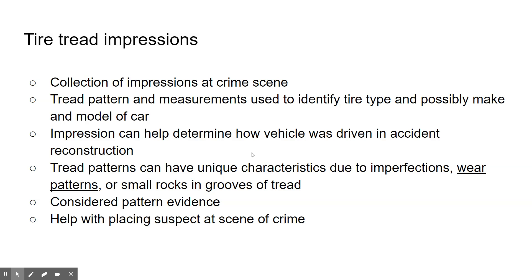Tire treads are another type of impression evidence that can give us a lot of information, especially about car accidents. We can identify the type of tire and possibly the make and model of the car. We can also figure out how the vehicle was driven and how the accident occurred. Tread patterns become unique to the car they're on because of imperfections in the tire, wear patterns, and small rocks picked up in the grooves. This is also considered pattern evidence and can be used to place a suspect at a scene.